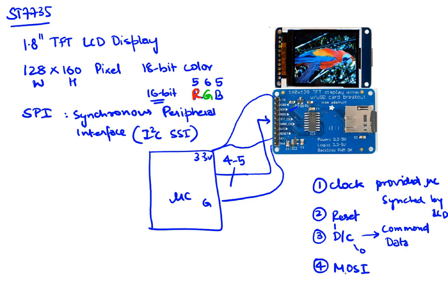The fourth pin of interest is where the actual bits we want to transfer go — this is called the MOSI pin, which is the data line on which we transfer data. The data itself can be either a command or data value, as we will see. The remaining pins exist because there is the possibility of using an SD card on this display, which we are not going to be using, so those pins are not needed in our library.